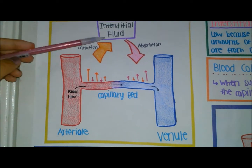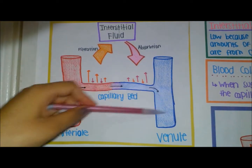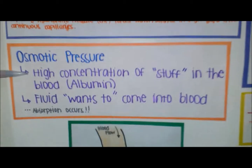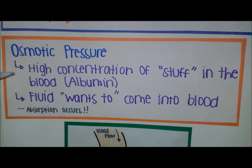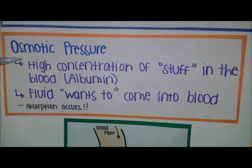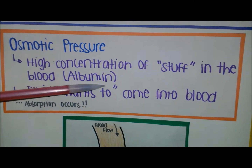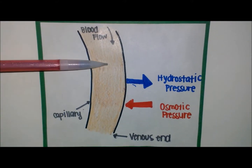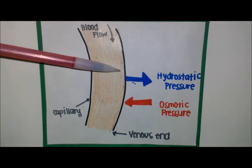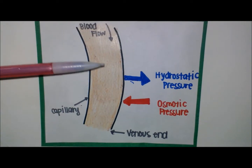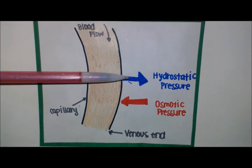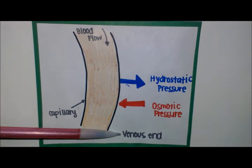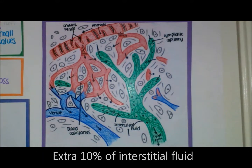After filtration pushes out the interstitial fluid from the arterial end, about 90 percent of it is reabsorbed into the venule side of the capillary. Reabsorption occurs thanks to osmotic pressure, which essentially sucks the fluid back into the blood due to a high concentration of albumin in the blood. Osmotic pressure helps pull the fluid back in, while hydrostatic pressure was responsible for pushing it out.